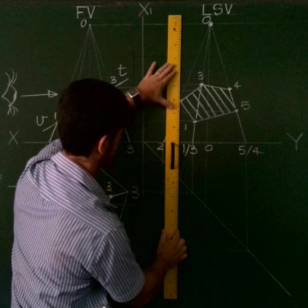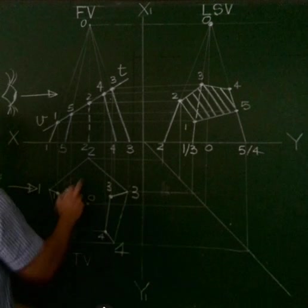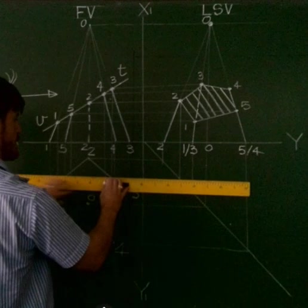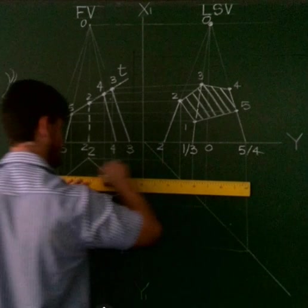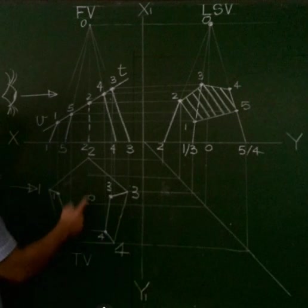So number two, project straight down, this is cut point two. Remember, I couldn't find it over here. Now we're using our left side view to simply project it across.